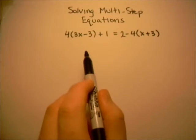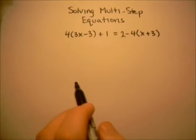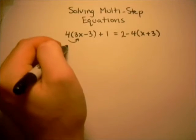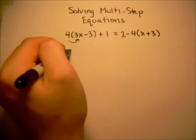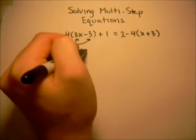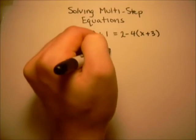The first thing that we want to do in solving this equation is to get rid of the parentheses on both sides. So first, multiply 4 times 3x, which gives us 12x, and then multiply 4 times negative 3, which gives us negative 12. And we still have this plus 1.